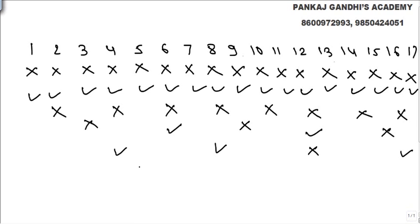The fifth person is asked to change the multiples of 5. 5 was on, he made it off. 10 was off, he made it on. 15 was off, he's going to make it on. 20, 25, going on.